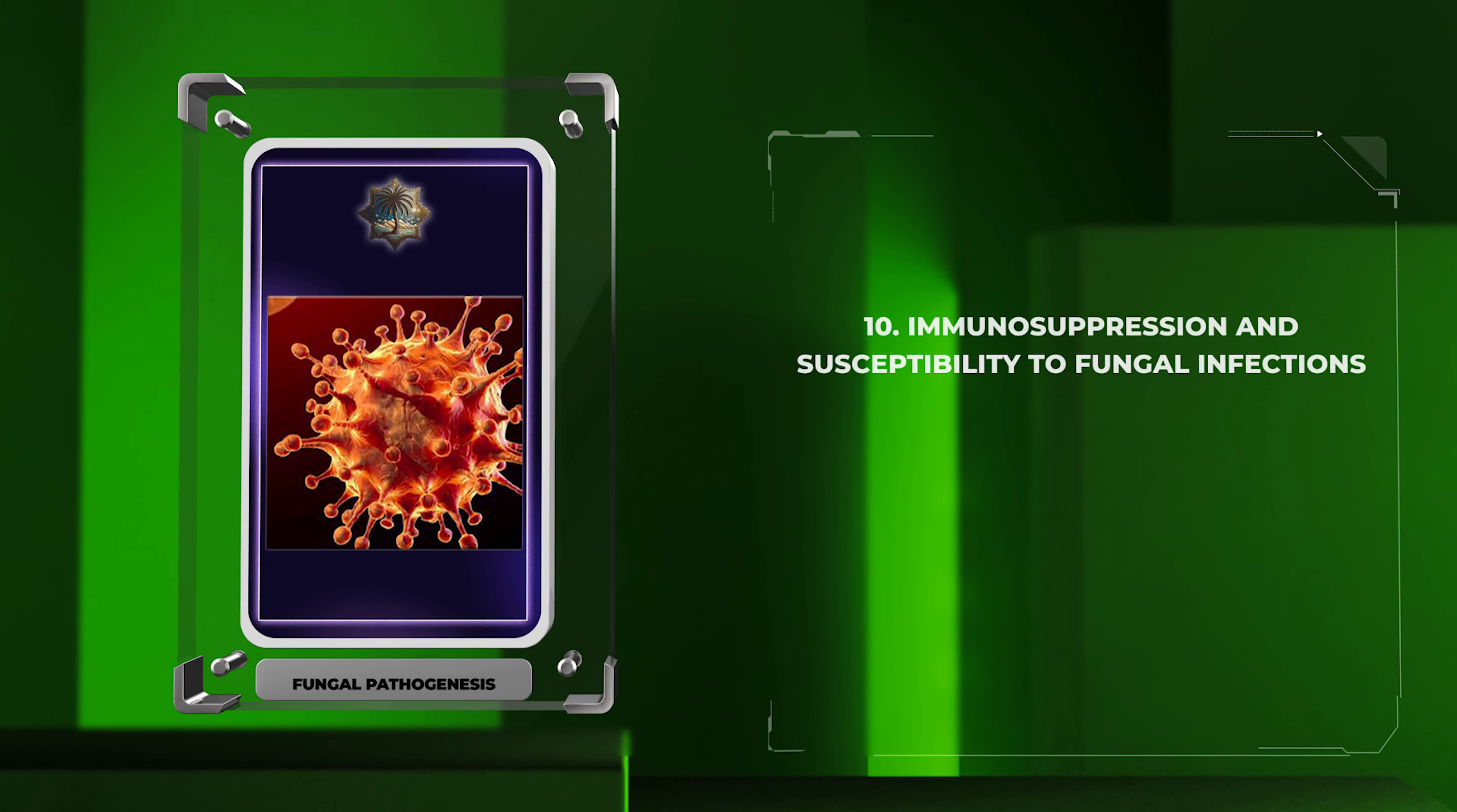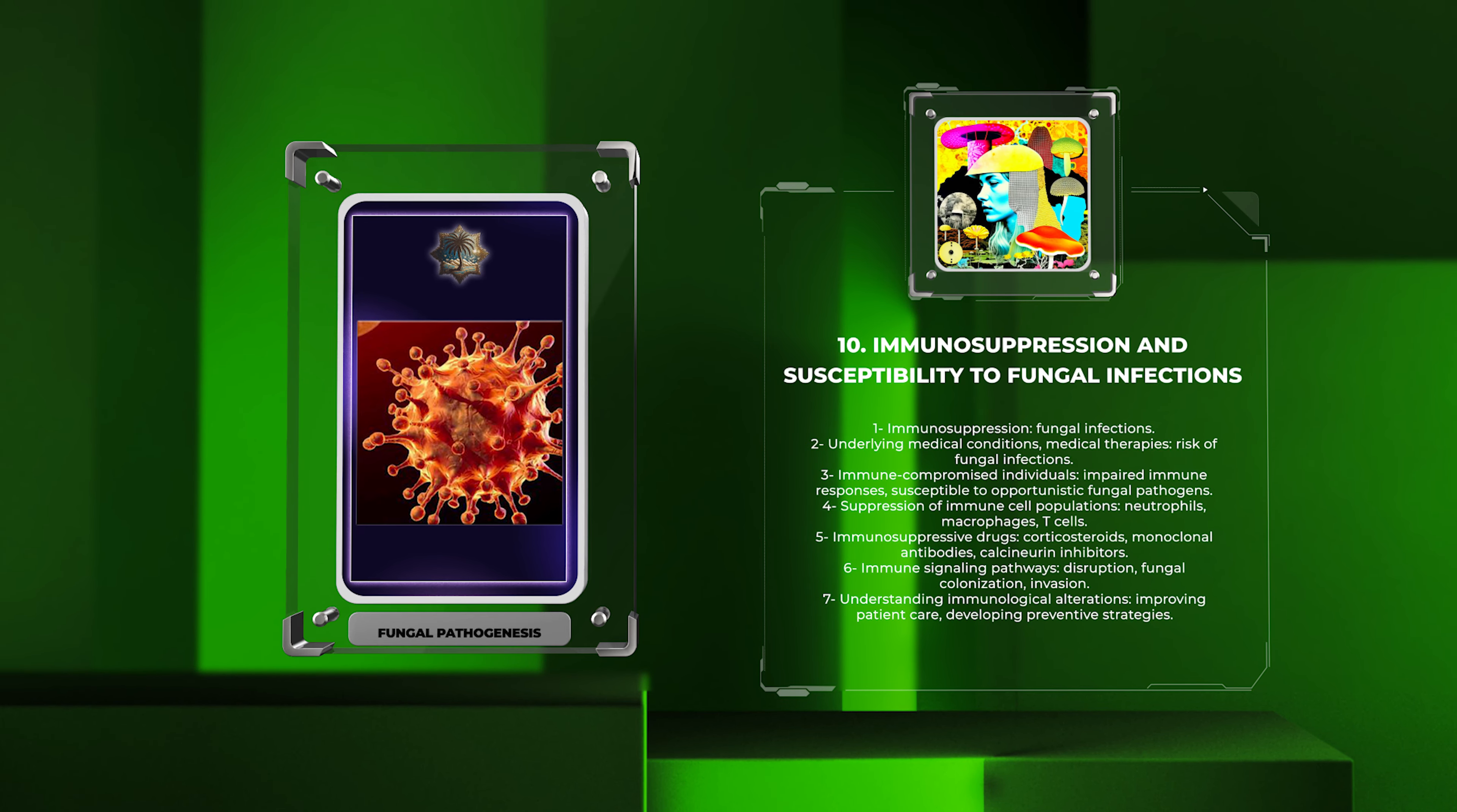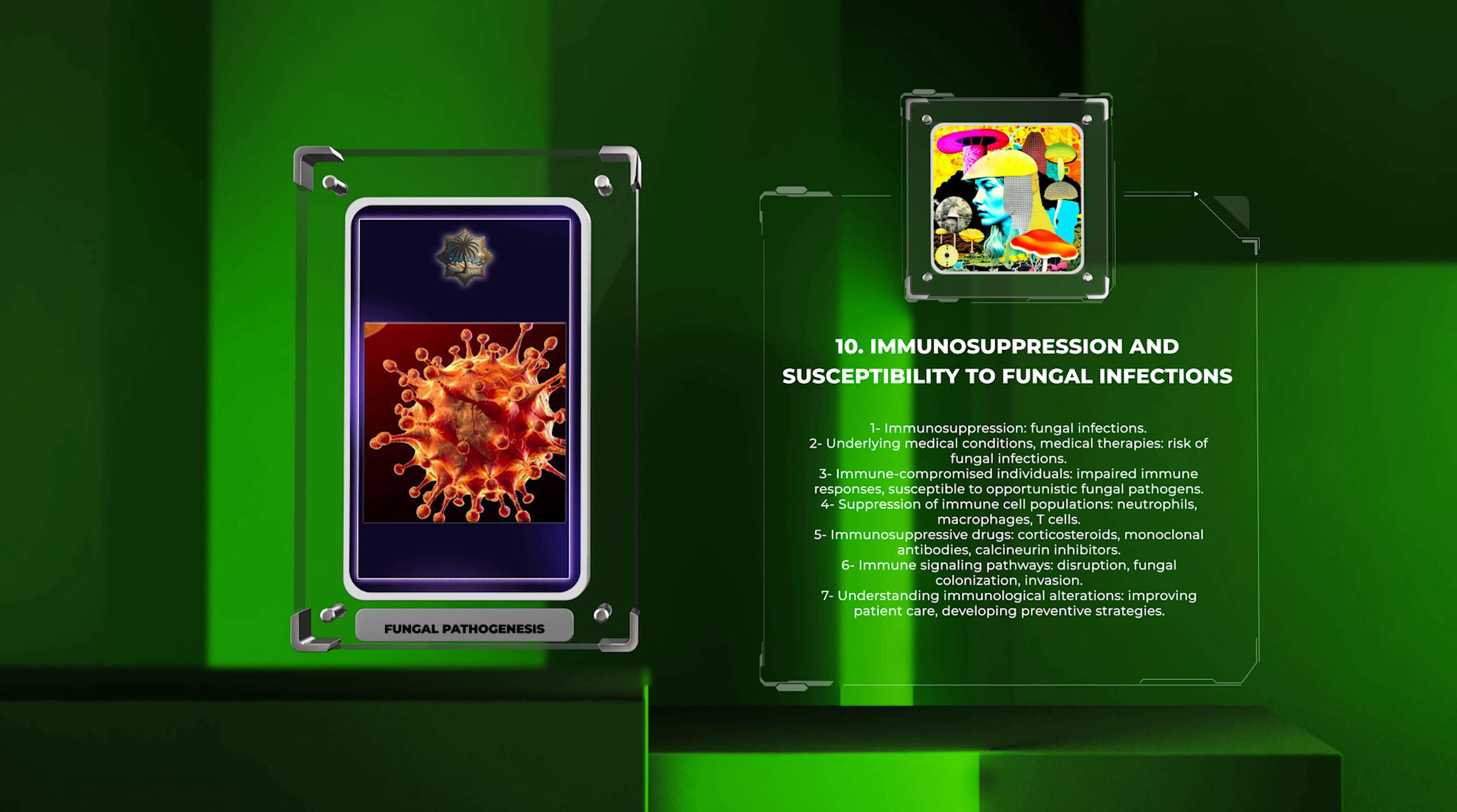Immunosuppression, either through underlying medical conditions or medical therapies, significantly increases the risk of fungal infections. Immune-compromised individuals have impaired immune responses, making them susceptible to opportunistic fungal pathogens. Suppression of specific immune cell populations, such as neutrophils, macrophages, or T-cells, can directly affect the control of fungal infections.